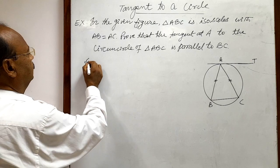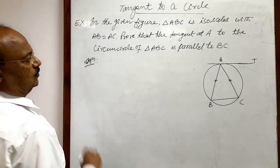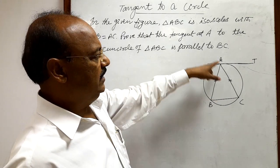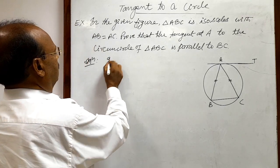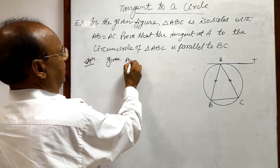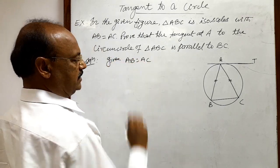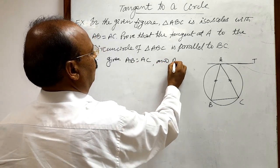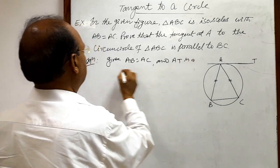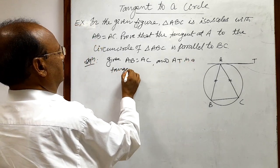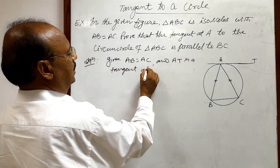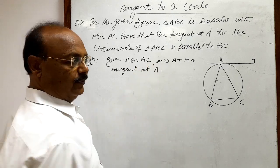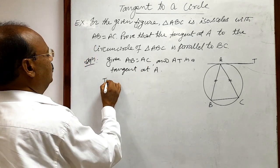So now let us see the solution. In this triangle ABC it is given that AB is equal to AC, correct. And AT is a tangent to the circle at the point of contact A. Clear. Then we have to prove that.